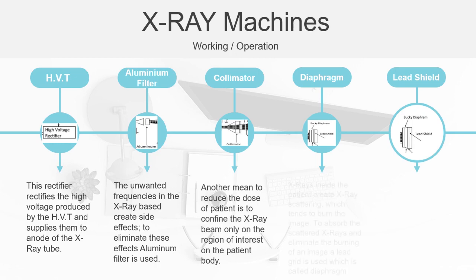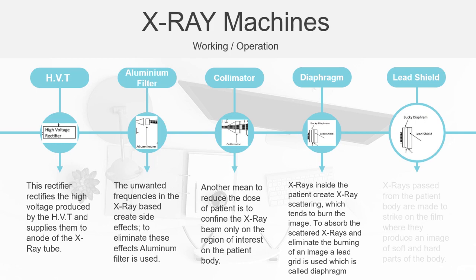After this, when the X-rays are incident on the patient's body, the patient's body creates X-ray scattering which tends to blur the image. To absorb scattered X-rays and avoid image burning, a lead grid — also called a diaphragm — is used. X-rays after passing through the body are made to strike on the film, that is the lead shield, where they produce an image of the soft and hard parts of the body.